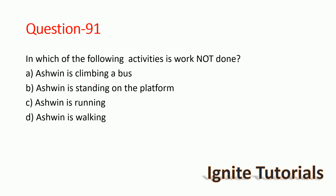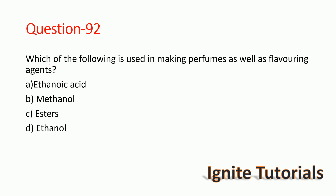Question 90: In which of the following activities is work not done? Ashwin is climbing a bus — that involves work. Ashwin is running and walking also involve work. But Ashwin standing on the platform is in a rest position, so no work is done — option B is the correct answer.